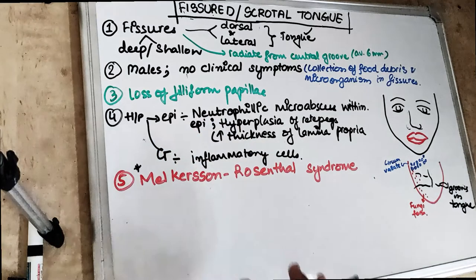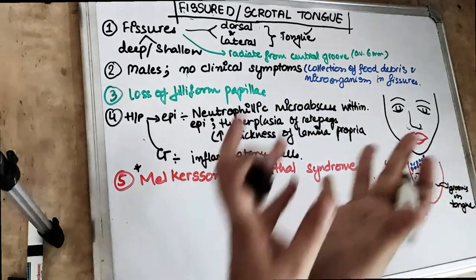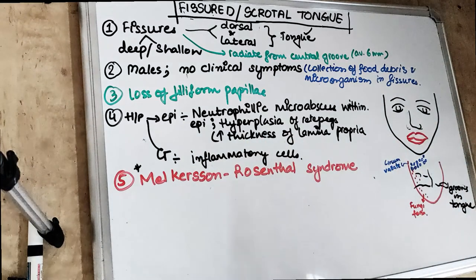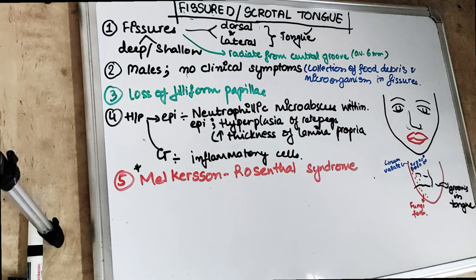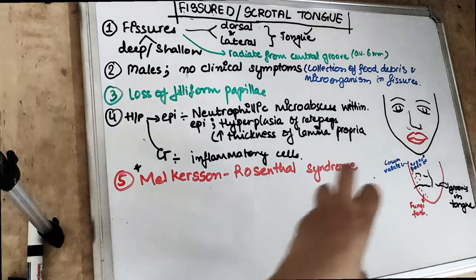These fissures or grooves actually radiate from the central groove in an oblique direction and reach the dorsal surface of the tongue. When they are deep, they can be connected to each other and separate the dorsum of the tongue into multiple lobules.